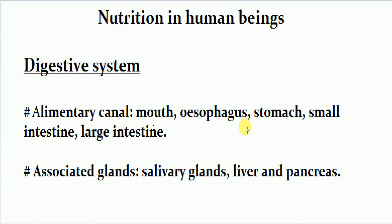Nutrition in human beings: In complex multicellular animals like humans, all the processes involved in nutrition are performed by a combination of digestive organs called the digestive system. The human digestive system consists of the alimentary canal and its associated glands. The alimentary canal consists of the mouth, esophagus, stomach, small intestine, and large intestine. Associated glands include salivary glands, liver, and pancreas. The alimentary canal starts from the mouth and ends at the anus, and is around 9 meters long.